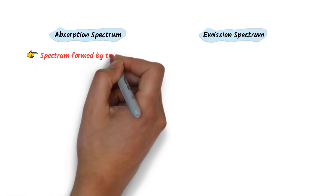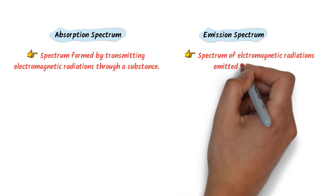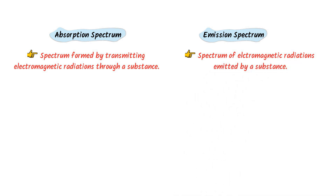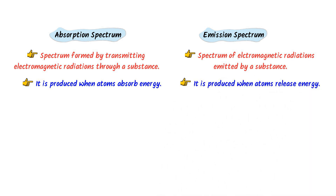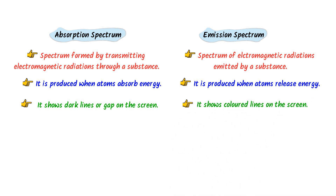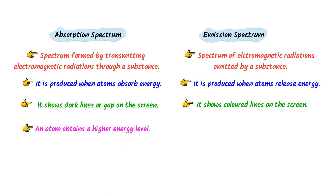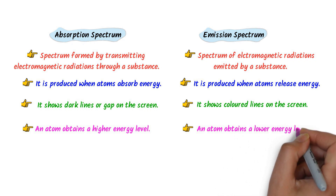Now the differences between absorption spectrum and emission spectrum. First, absorption spectrum is formed by transmitting electromagnetic radiation through a substance, while emission spectrum is the spectrum of electromagnetic radiation emitted by a substance. Second, absorption spectrum is produced when atoms absorb energy, while emission spectrum is produced when atoms release energy. Third, absorption spectrum shows dark lines or gaps on the screen, while emission spectrum shows colored lines. Fourth, in absorption spectrum an atom moves to a higher energy level, while in emission spectrum an atom moves to a lower energy level.